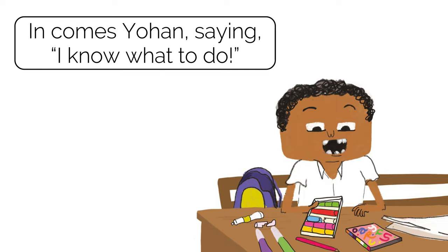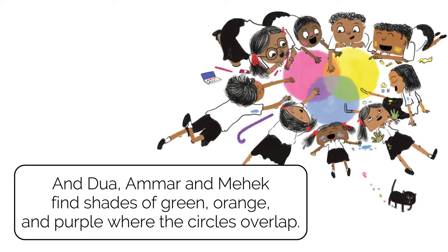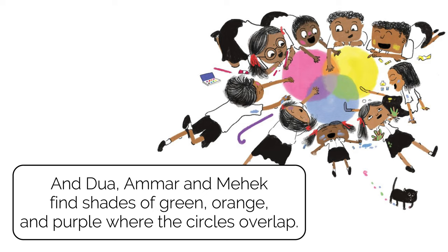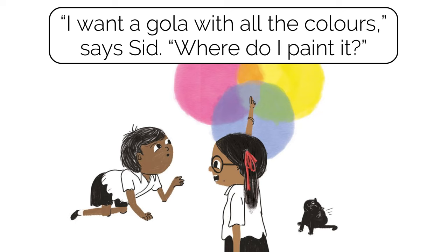In comes Yohan saying, 'I know what to do!' Mario paints a pink circle. Yohan paints his circle yellow. Akira paints a blue circle. And Dua, Ama, and Mehek find shades of green, orange, and purple. Where the circles overlap, Arman touches both pink and blue, Muskan touches both blue and yellow, and Deepu touches yellow and pink. 'I want a gola with all the colors,' says Sid. 'Where do I paint it?' 'Right here in the center, where all the circles overlap,' replies Mario.